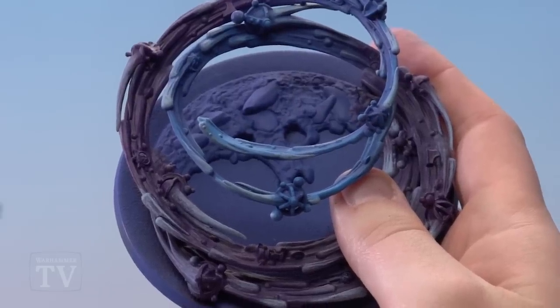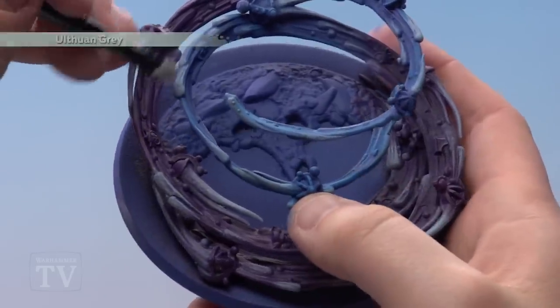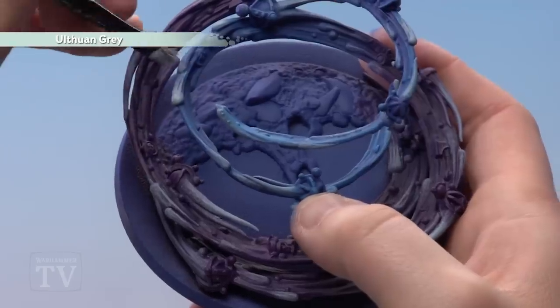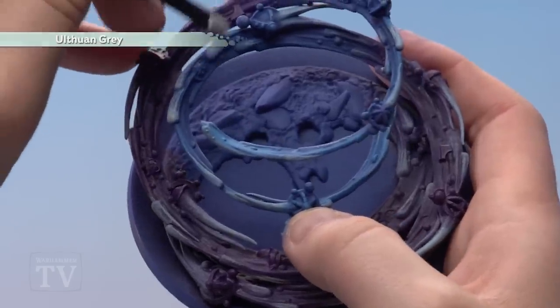With those comet and swirls now dry brushed we're just going to highlight them up with a little bit of Ulthuan Grey and again just gently just around the raised areas of the comets. Just a soft dry brush should do this.